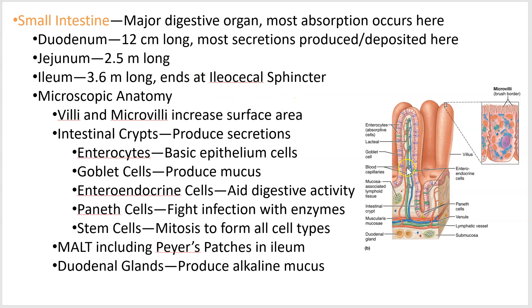The pyloric sphincter of the stomach is kind of the entrance door, and then the ileocecal sphincter is the exit door. Microscopically, the walls of the intestine have these little finger-like projections called villi — a single one is a villus.